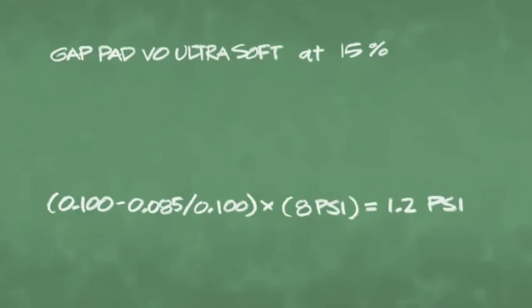One-tenth of an inch thickness, deflected 15%, leaves a thickness of 85 one-hundredths of an inch, which we divide by the original thickness of the pad, one-tenth of an inch. Then, simply multiply by the Young's modulus of 8 PSI. Now, we can easily solve the question of how much pressure will go on the component, 1.2 pounds per square inch.